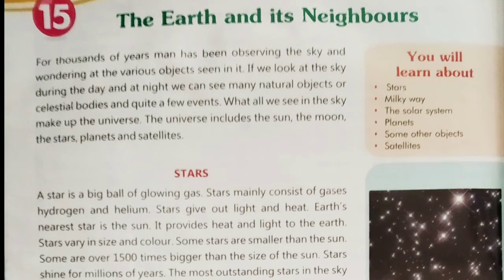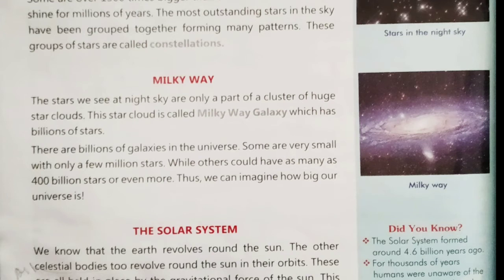Stars vary in size and color. Some stars are smaller than the sun, while some are over 1500 times bigger than the size of the sun. Stars shine for millions of years. The most outstanding stars in the sky have been grouped together forming many patterns. These groups of stars are called constellations.